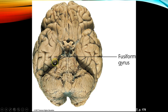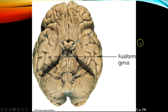The fusiform gyrus is the area that helps process faces. Damage here can lead to face blindness, and we'll watch a really interesting video on that in Canvas. Thank you very much.